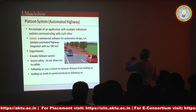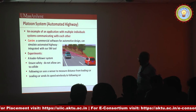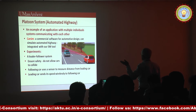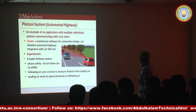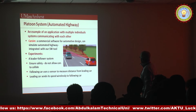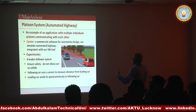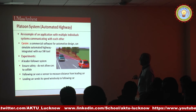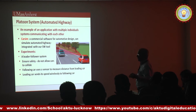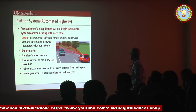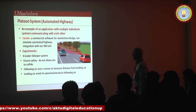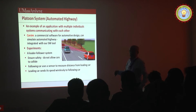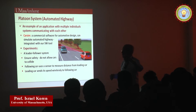The next one is the platoon system, or automated highway, which is more complicated than the previous examples for two reasons. First, we have multiple individual systems communicating with each other. Second, we will switch from one control algorithm to another depending on state. For these experiments we will use commercial automotive simulation software, which is used normally by car manufacturers for automotive design and can simulate the automated highway. We've integrated our software tool into it to classify the state and determine what to do in each state.